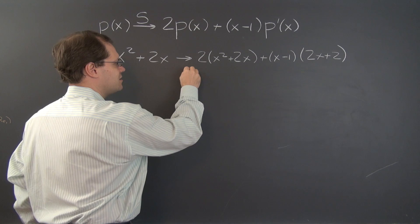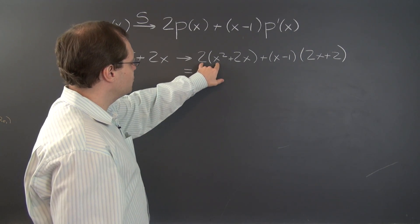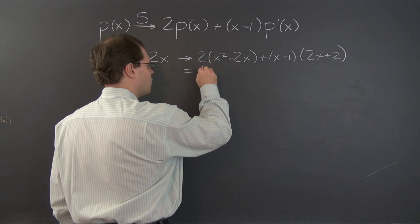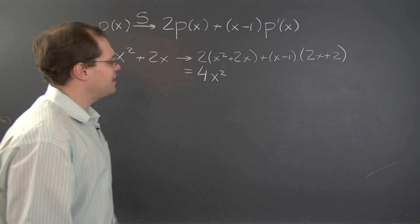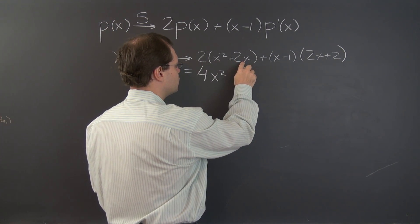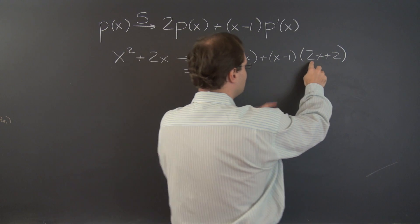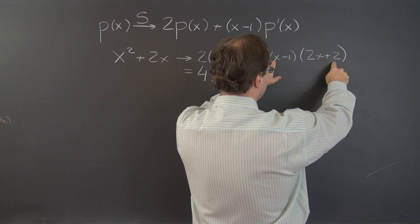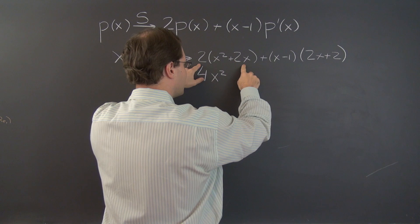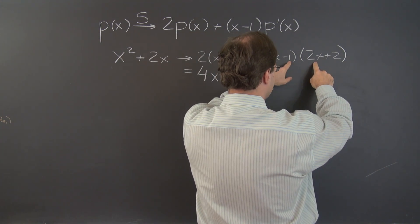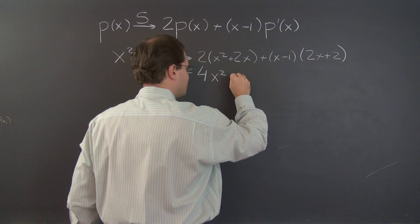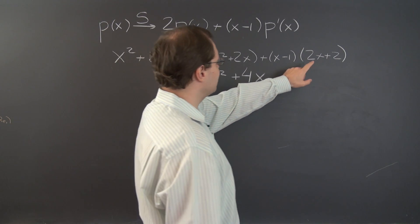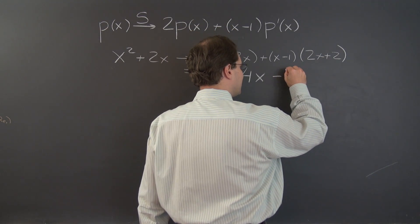And now let's simplify the result. Collecting the powers, 2x squared plus 2x squared, so it's 4x squared. Now let's collect the linear powers, so 4x, and then from here we'll get minus 2x, and then plus 2x, so it goes away. But just to make sure, 4x minus 2x makes 2x, and plus 2x goes back to 4x. So it's plus 4x, and the only remaining term is the constant term, which is minus 2.